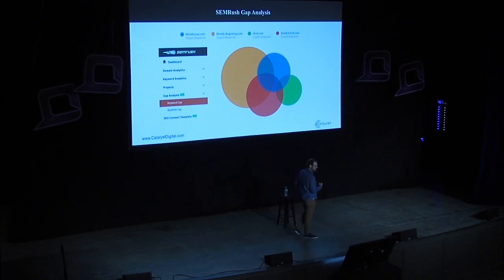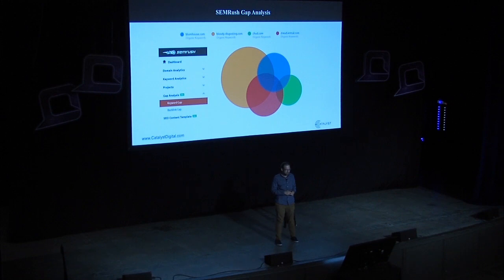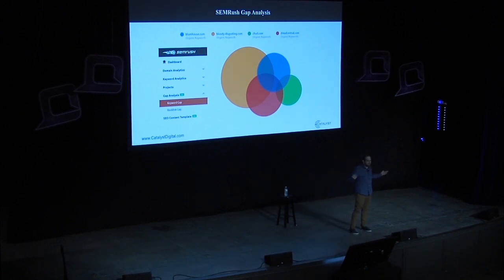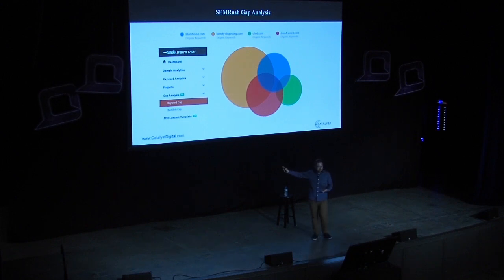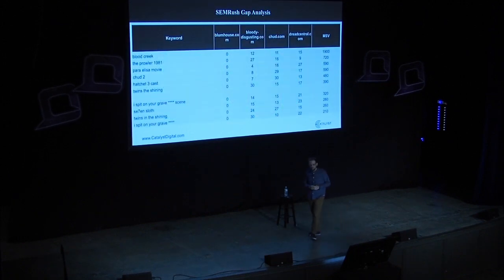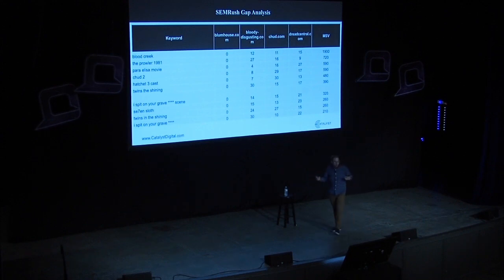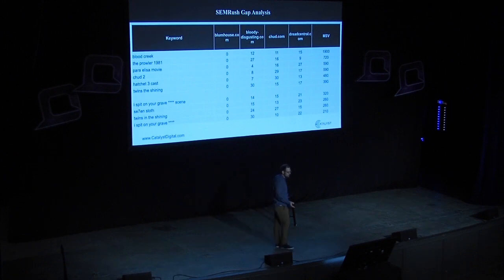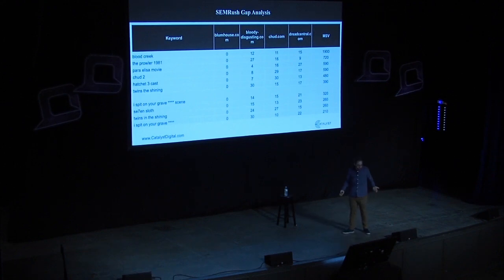SEMrush is an incredible tool. I'm a huge fan of their API if you're really nerdy. They have this one tool called Keyword Gap — you put in your domain and a series of competitor domains. These are all prominent horror movie blogs: BloodyDisgusting.com, Chud.com, DreadCentral. I was looking at Blumhouse, a horror movie producing company with a really great blog. If you compare it to competitors, you see all competitors are talking about Blood Creek but Blumhouse isn't on the map — they have no keywords ranking for Blood Creek or the Prowler. These are really good ideas: if all my competitors are doing this, maybe I should have content on this subject too.